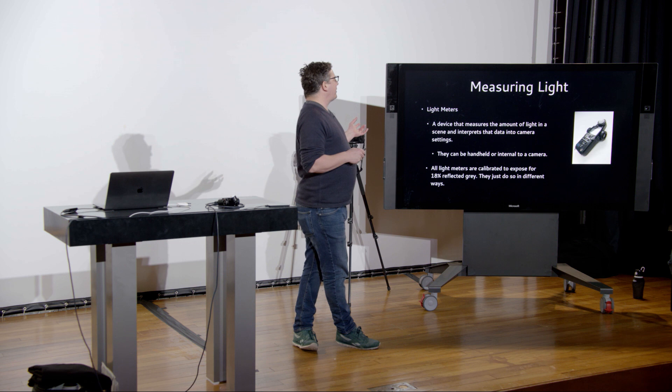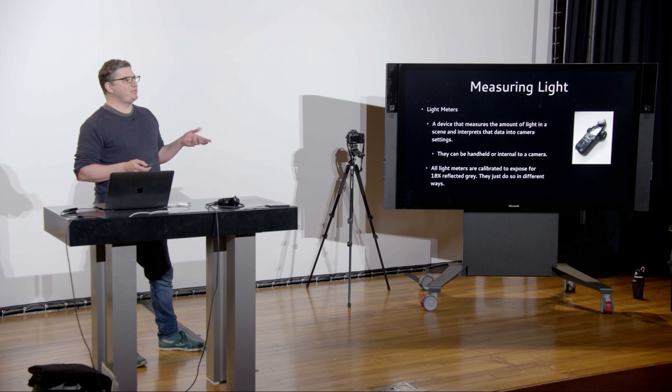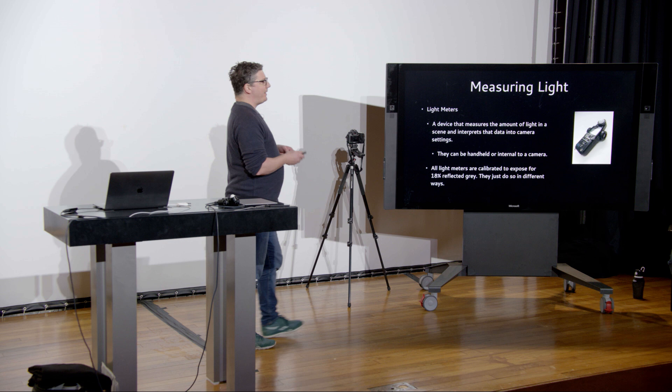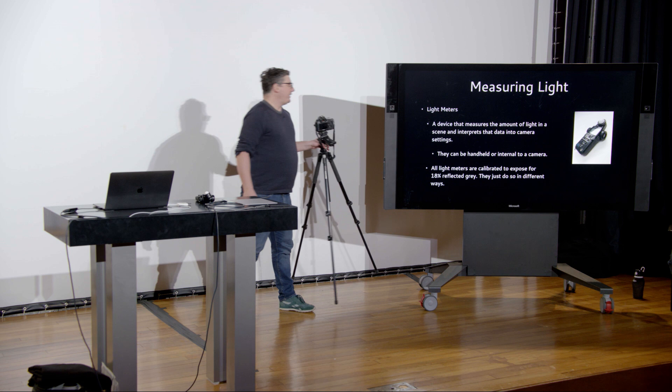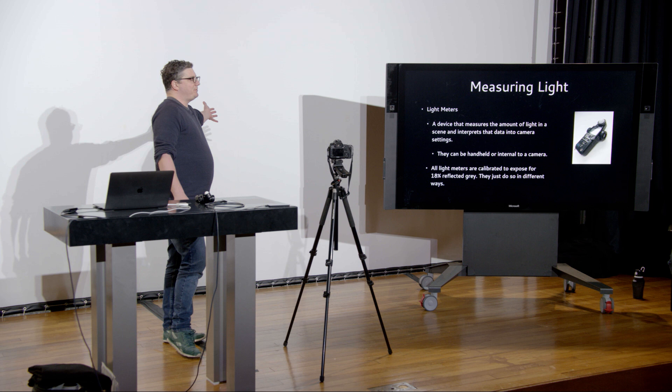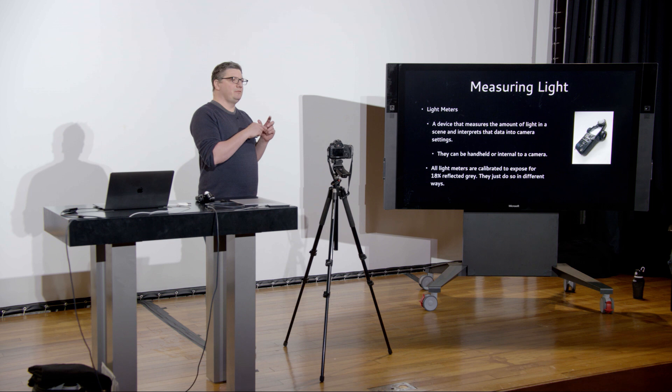There are a few different ways to measure light. You can use a handheld light meter, but more often we'll use the internal light meter of the camera. This measures the light striking the subject, reflecting back through the lens onto the sensor, and says: if you set your camera to these values, you'll get a decent exposure. All light meters — handheld or internal — are calibrated to expose for an idea called 18% reflective gray.